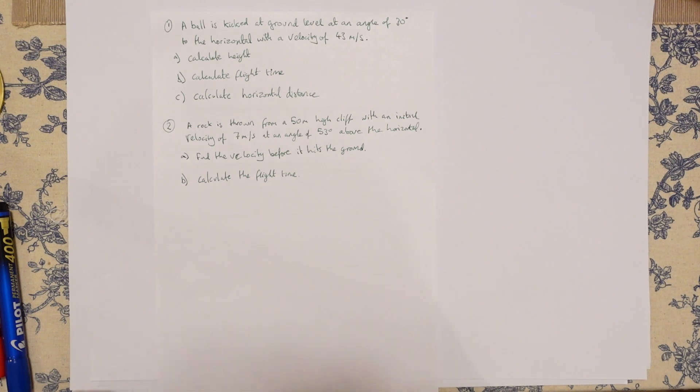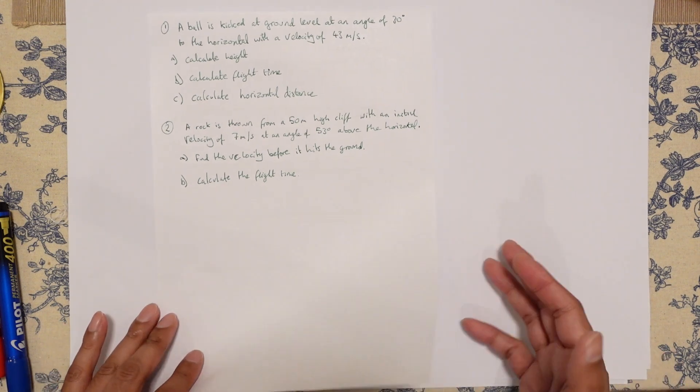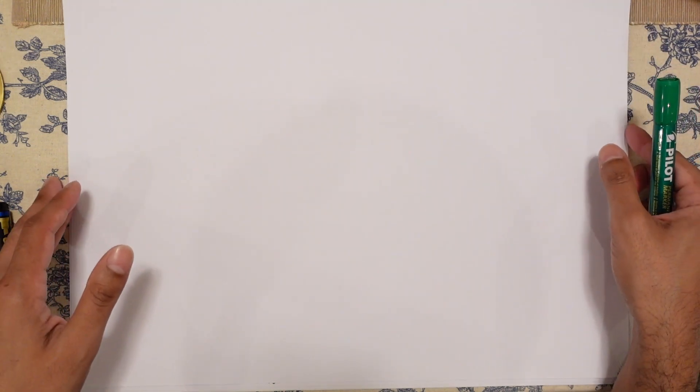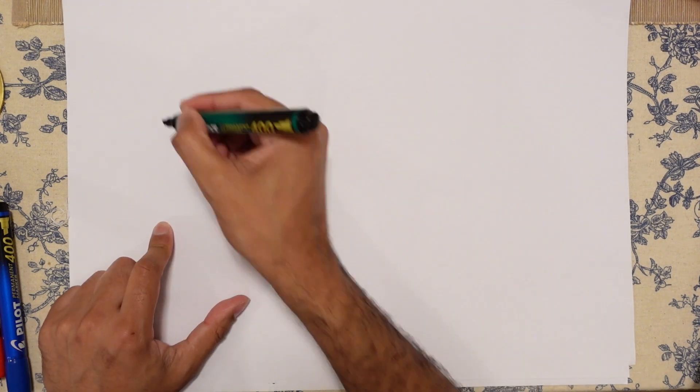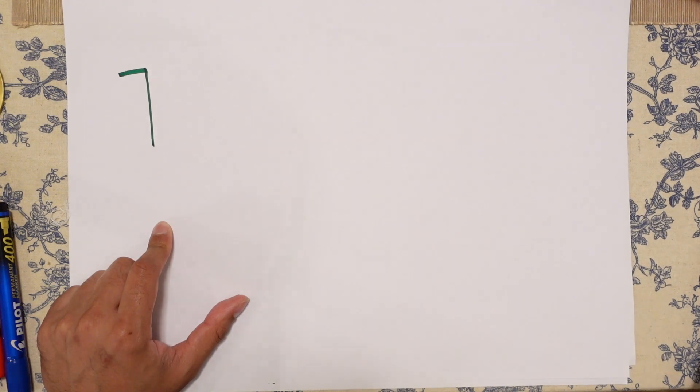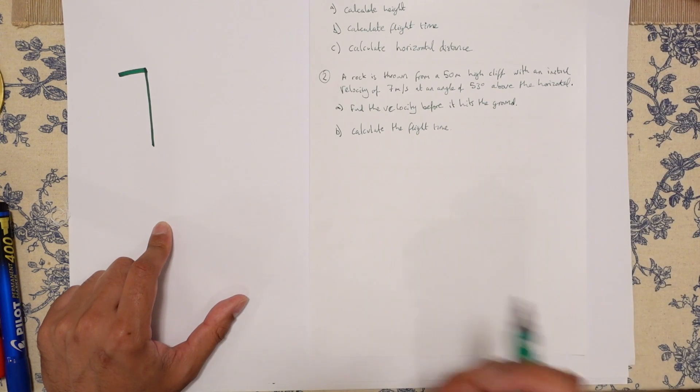Find the velocity before it hits the ground and calculate the flight time. So you've got two parts to it, but within those two parts, there's more parts. First of all, I'm going to draw out the situation. So you have a 50 meter high cliff.